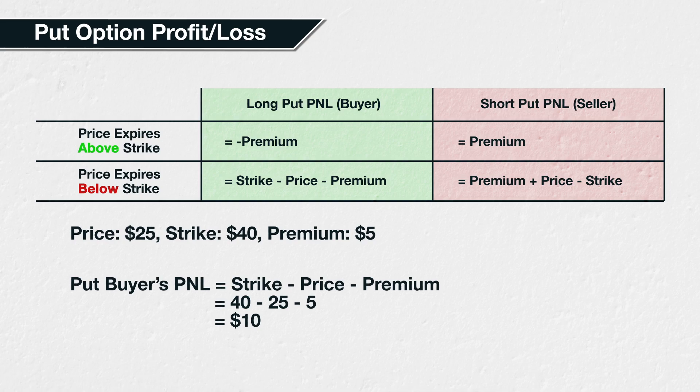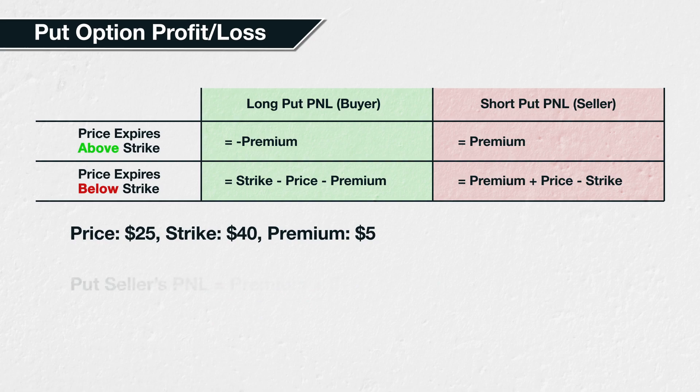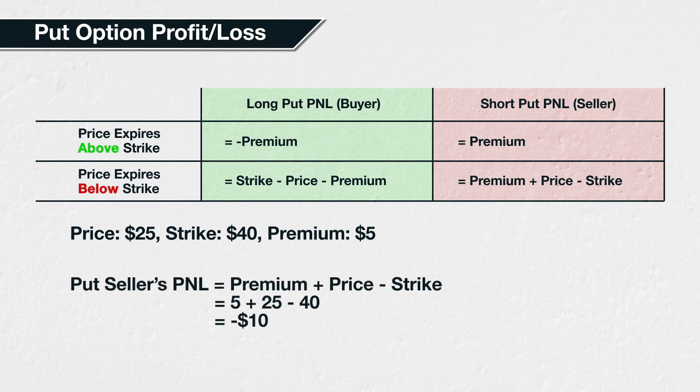So the put option buyer has a profit of $10 per share. The seller of the put option has a profit or loss of premium plus price minus strike, or $5 plus $25 minus $40, or minus $10. So the seller of the put option has a loss of $10 per share. As you can see, the seller's loss equals the buyer's profit.